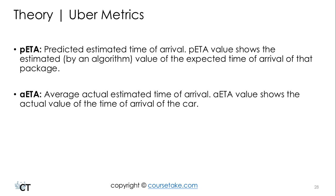Finally, you've got two other metrics: PETA and AETA. PETA stands for Predicted Estimated Time of Arrival — it shows the estimated value, by an algorithm, of the expected time of arrival of the car. AETA stands for Average Actual Estimated Time of Arrival and shows the actual value of the time of arrival of the car. Keep all these metrics in mind because they're going to be super useful when we answer the multiple choice questions later on in the course.